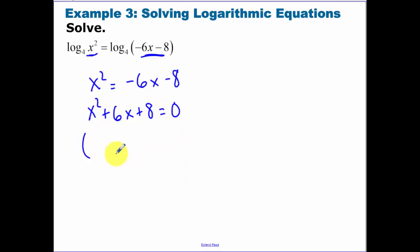Now try and factor. And I'll tell you right now, with these logarithm equations, these answers are always going to factor. So I have an 8, two things to multiply to be 8, add to be 6, positive 4, positive 2. Set each one of those factors equal. We get negative 4 and negative 2.